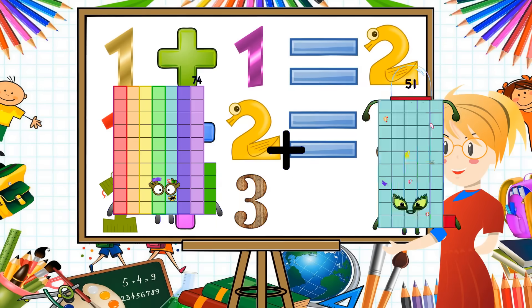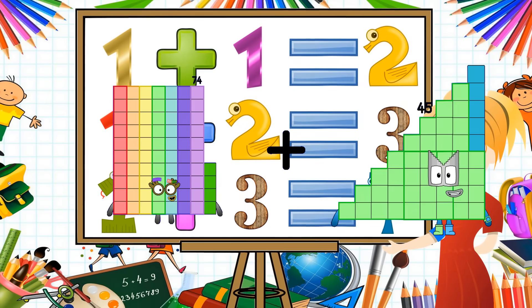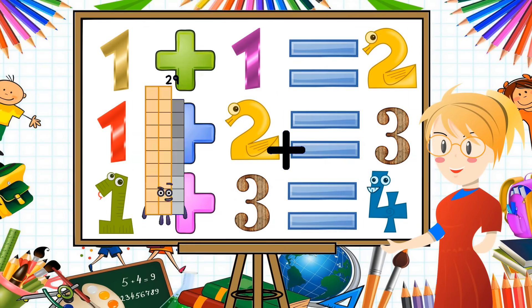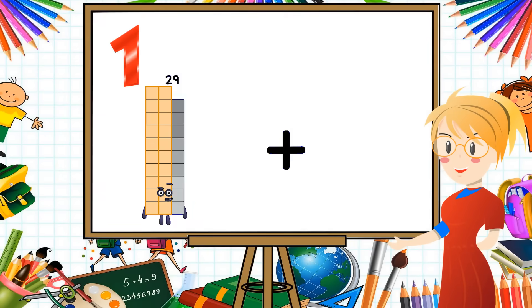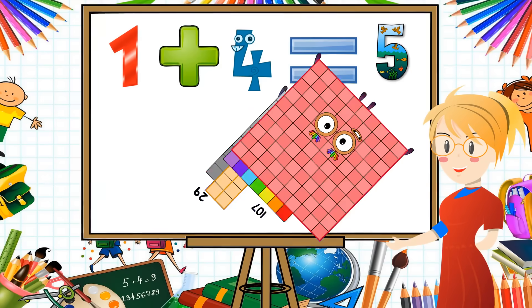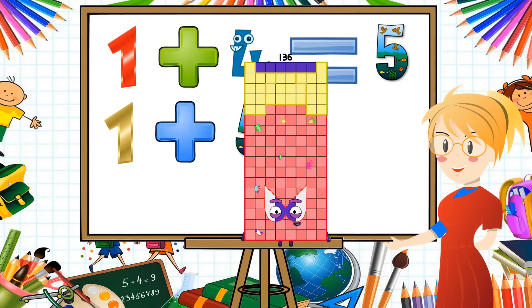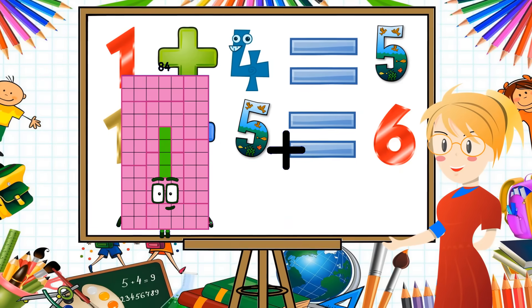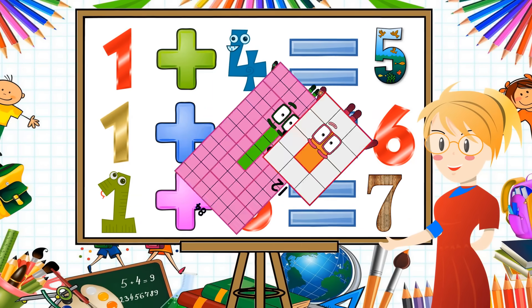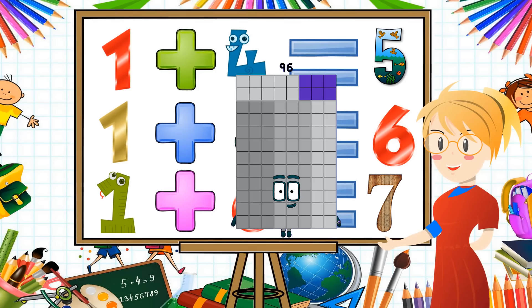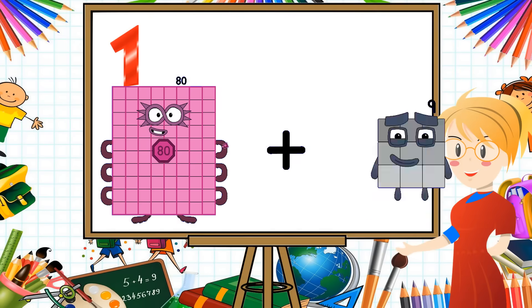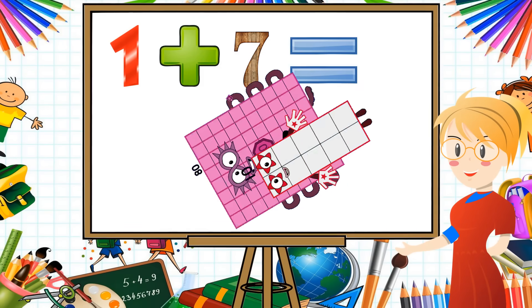74 plus 45 equals 119. 29 plus 107 equals 136. 84 plus 12 equals 96. 80 plus 10 equals 90.